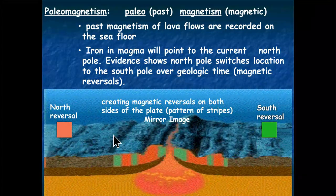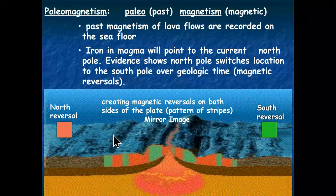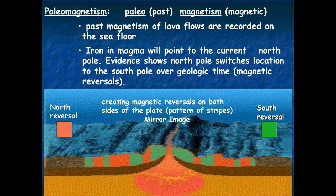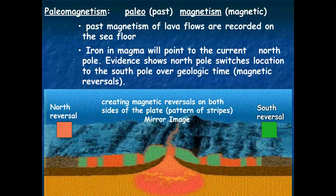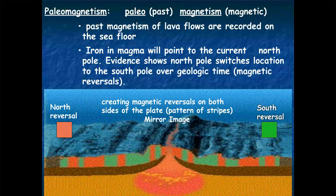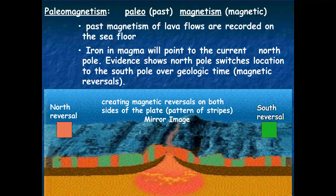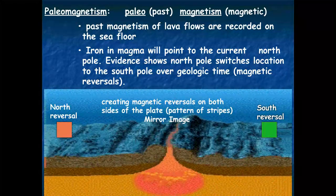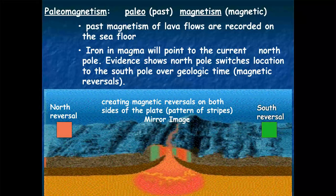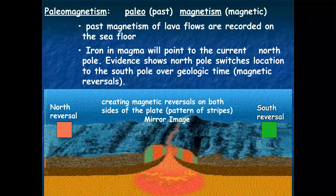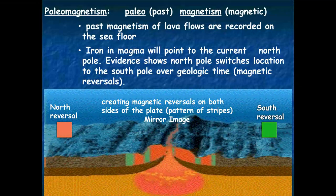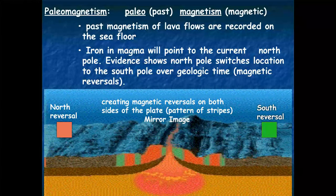Paleomagnetism represents the defining evidence that clearly differentiates the continental drift hypothesis of Alfred Wegener from the plate tectonic theory. By the late 1960s, because of the paleomagnetism process on the ocean floor, most scientists—if not all geology-type scientists—are now convinced that the continents are on the move. This is the late 1960s, and we'll now move on into plate tectonics.